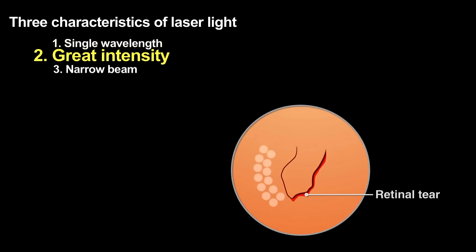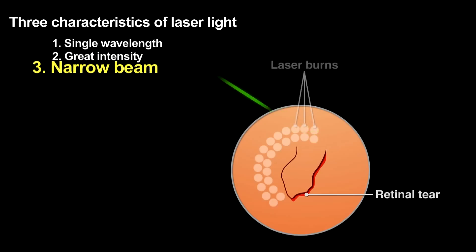The laser beam then strikes the retina where the tissue strongly absorbs that light, using the high intensity light to weld the detached retina back into place. The beam's narrowness allows the surgeon to affect only the area of the retina that needs to be repaired, areas as small as 30 microns.